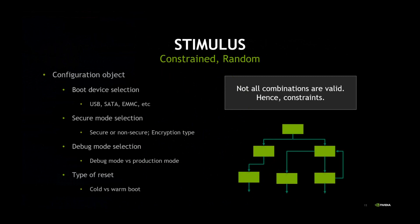First is stimulus. When verifying boot ROM, we are not writing new sequences. Boot ROM itself is a giant sequence with lots of parameters controlling the paths taken inside it. We created a configuration object containing these parameters — for example, which boot device is going to be used, whether boot ROM will use secure or non-secure mode, and what type of reset caused boot ROM to execute. We added constraints because not all cross-product combinations of these modes are legal. We randomize this configuration object to yield multiple valid combinations, enabling us to execute the boot ROM in various possible configurations.